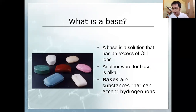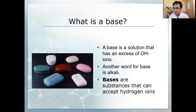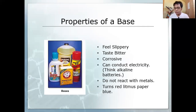What is a base? A base is a solution that contains an excess of hydroxide ions, based on the Arrhenius theory. Another word for base is alkali — alkaline earth metals when they contain hydroxide ions are strong bases. Bases are also substances that can accept hydrogen ions, based on the Bronsted-Lowry theory. Properties of a base: it feels slippery — like soap — and it is bitter.